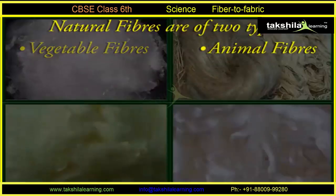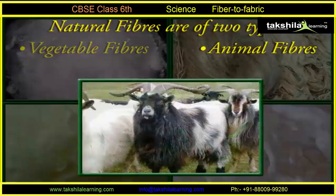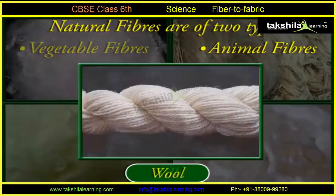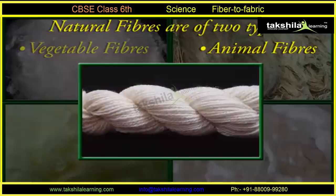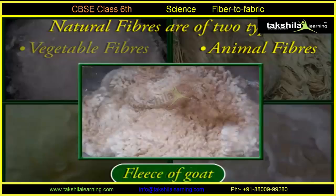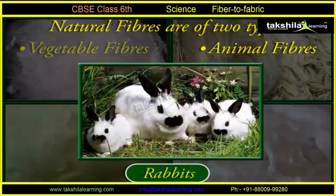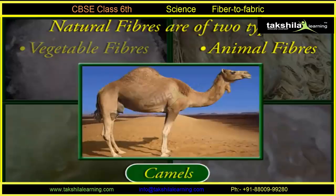Type B: animal fibers — these fibers are obtained from different animals. Wool and silk fibers are obtained from animals. Wool is obtained from the fleece of sheep or goat; it is also obtained from the hair of rabbit, yaks, and camels. Silk fiber is obtained from the cocoon of the silkworm.